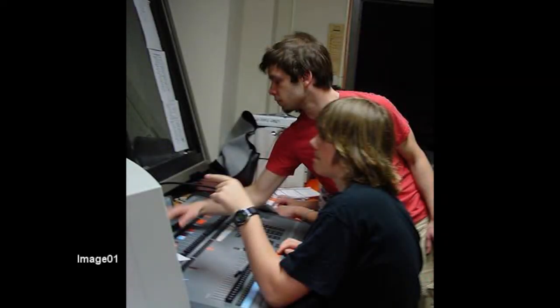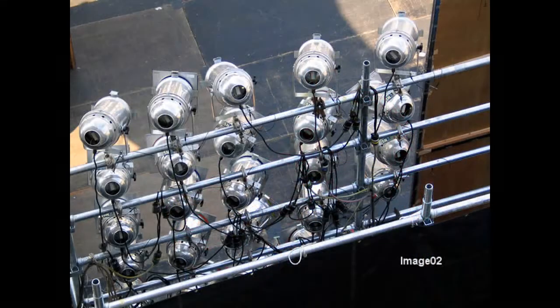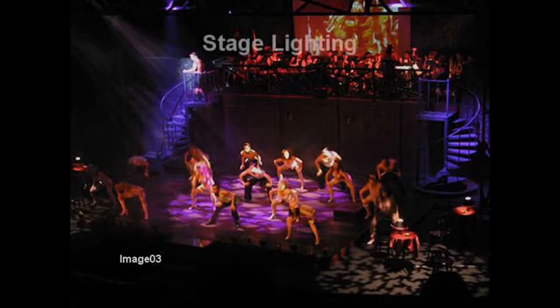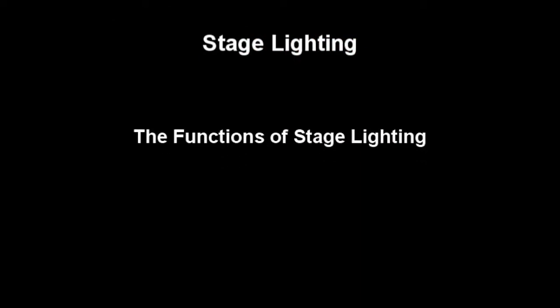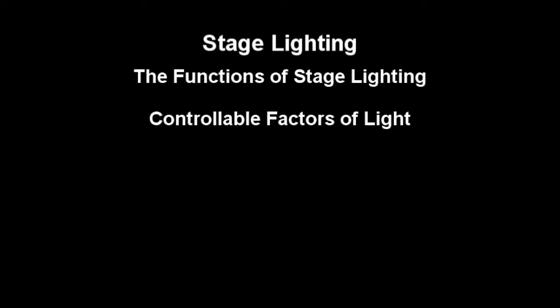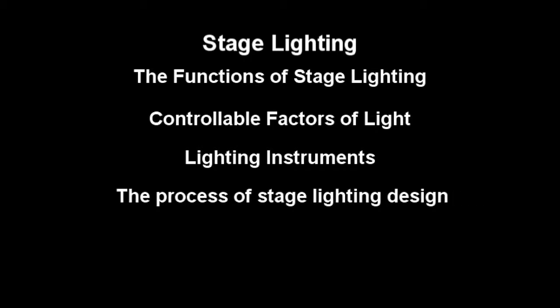In this unit, we will consider the theories and practices of stage lighting, and see how the lighting designer can influence the overall effect that the dramatic action of the play has on an audience. We will consider the basic functions of stage lighting, look at the controllable factors of light, and see specifically how a lighting designer can control light. Then we'll identify the most common lighting instruments in the theater. Finally, we will take a step-by-step look at the process that a designer goes through to create an effective and aesthetically pleasing lighting design.